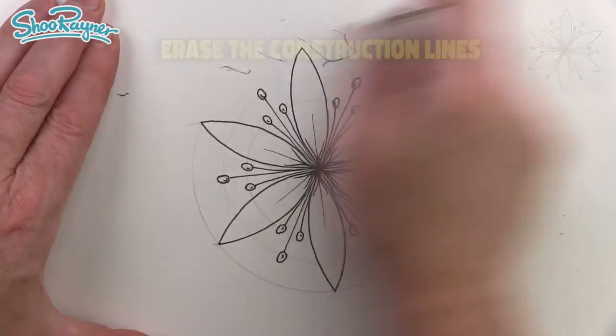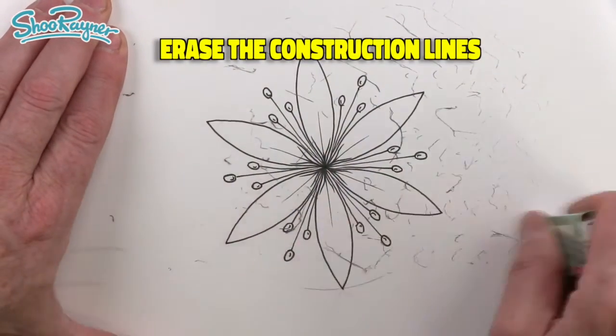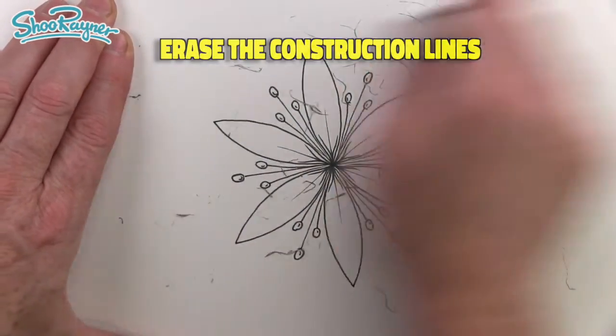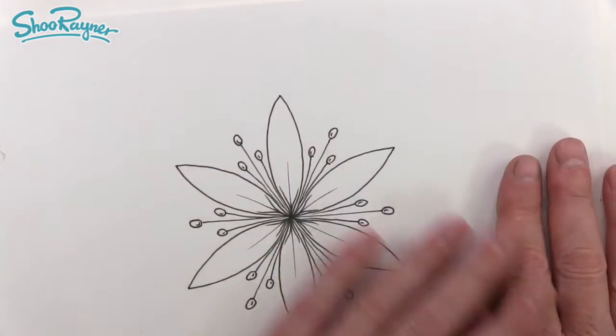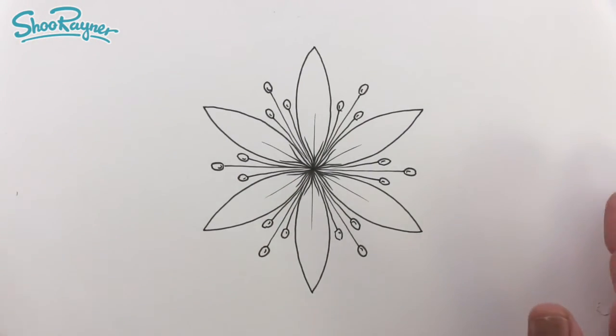Then when you are absolutely sure that the ink has dried you can erase all those pencil construction lines. And when you show it to your friends and family they will be amazed. How did you do that? That's incredible.